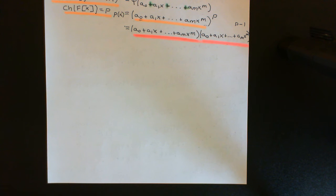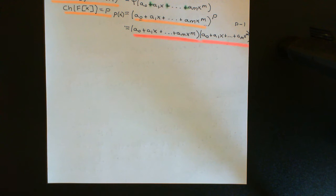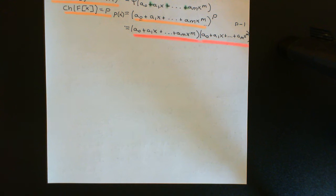What we now want to do is discuss Theorem 2, which goes further and completely characterises which polynomials in the ring of polynomials over this finite field of characteristic P are separable and which are not. This theorem is exactly the same as Theorem 2 from the video on separable polynomials over a field of characteristic 0, and the proof will be identical, but I'll repeat it here for completeness.